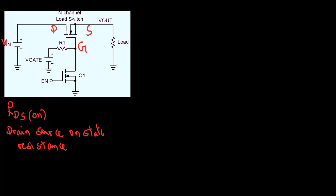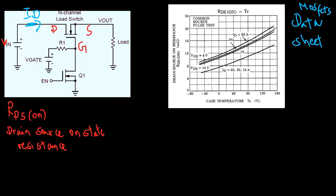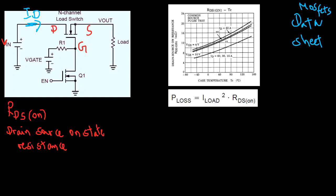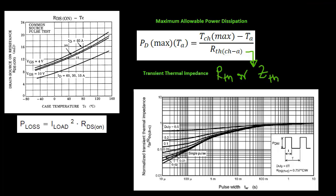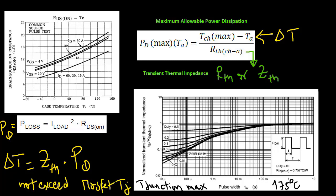Generally, on-state resistance determines the upper limit of the drain current ID. Ensure that not only the loss or the permissible power dissipation, but also temperature rise due to heating does not cause the device to exceed its operating temperature range.